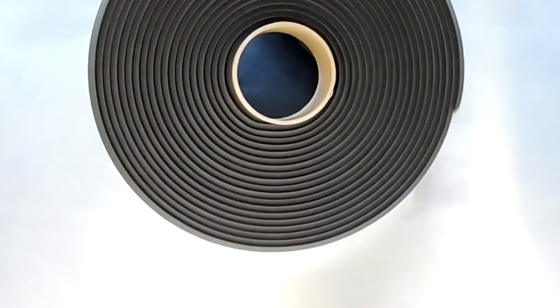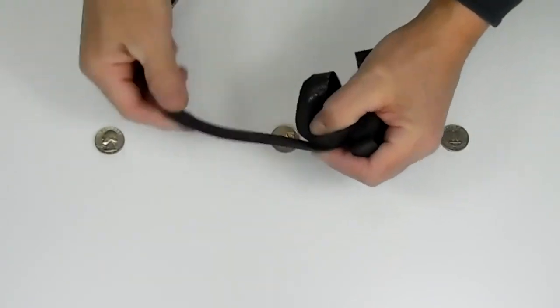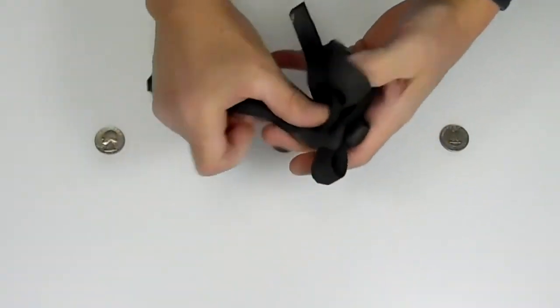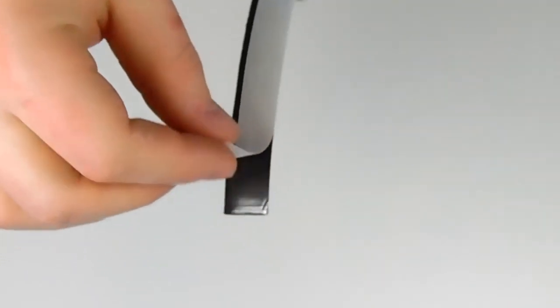TurboTape advantages include no adhesive transfer at 200 degrees Fahrenheit. It can be repositioned multiple times until desired location is achieved. Turns corners with no wrinkling and stays in position for days. The peel-off strip keeps the tape clean prior to use.